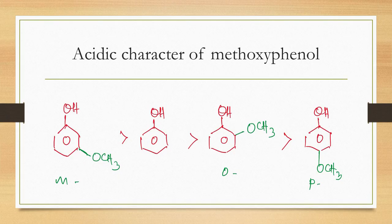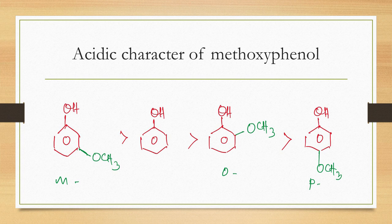Example: methoxyphenol. OCH₃ is plus-M as well as minus-I. Oxygen has lone pair electrons (hence plus-M) and is electronegative (hence minus-I). At meta position, OCH₃ only exhibits minus-I, making the meta isomer most acidic. Ortho isomer is less acidic than phenol because plus-M dominates, but more acidic than paramethoxyphenol due to minus-I. This is the acidic character of phenols.